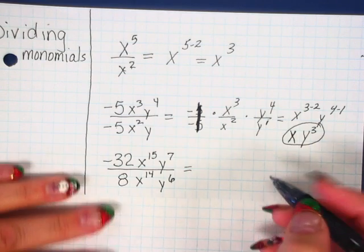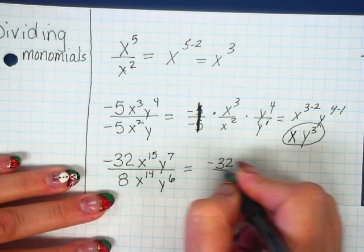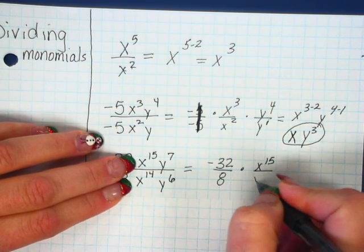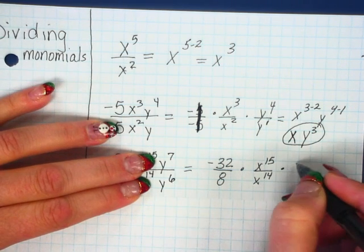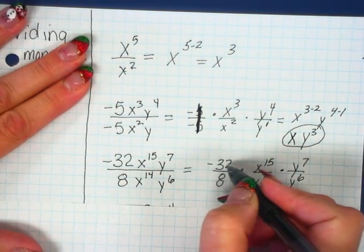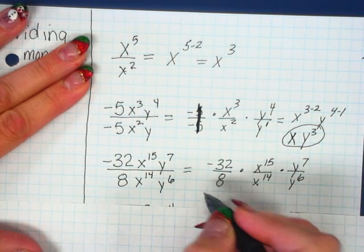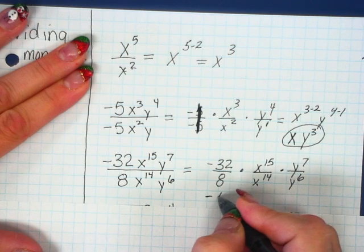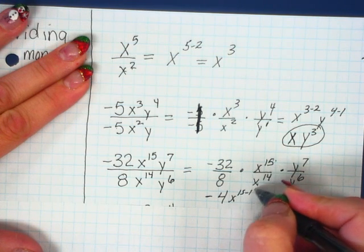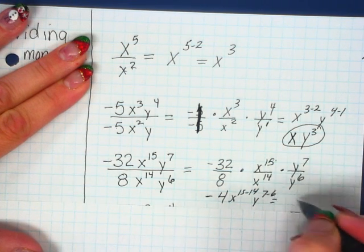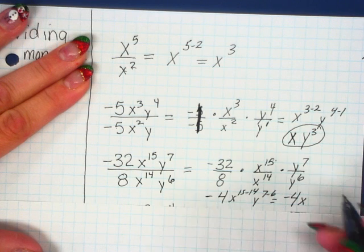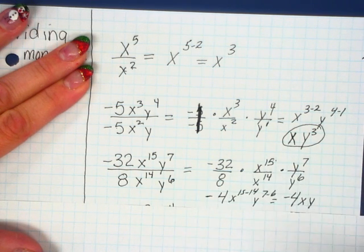Same thing. Get the like things together. We're going to put the numbers together, negative 32 and 8. Now working on the x's, x to the 15th, x to the 14th. And now the y's, y to the 7th, y to the 6th. So when we look at this we've got negative 32 divided by 8. Negative divided by a positive is a negative. 32 divided by 8 is 4. Remember we're subtracting our exponents. x to the 15 minus 4 and y to the 7 minus 6. So negative 4. 15 minus 4 is 1, so x to the first and we don't need to write the 1. And y, 7 minus 6 is 1.